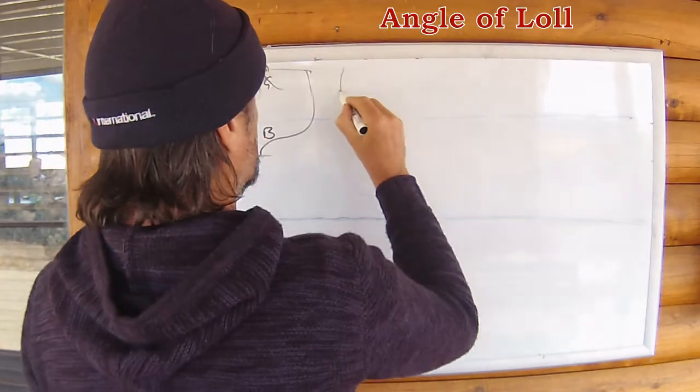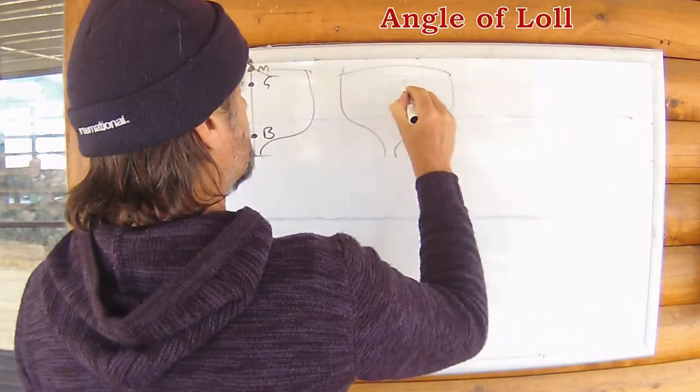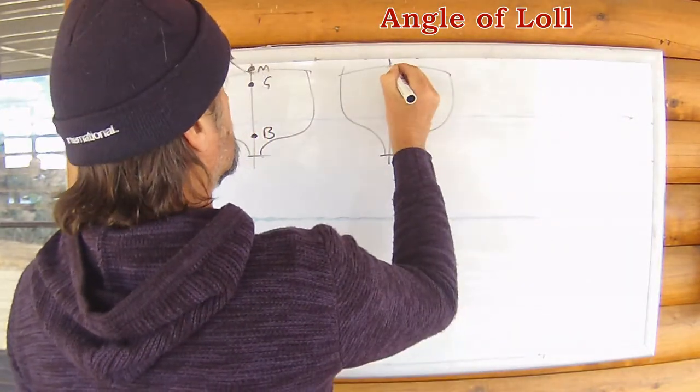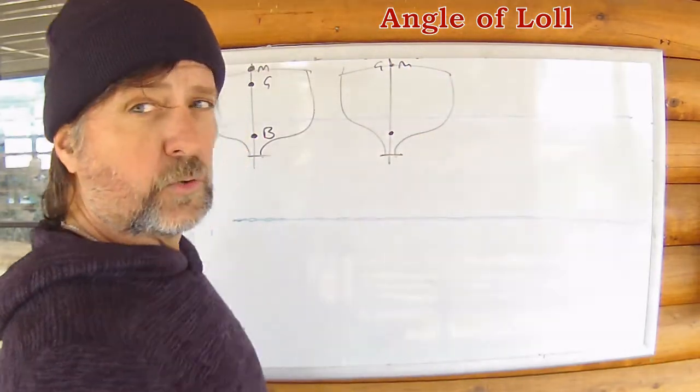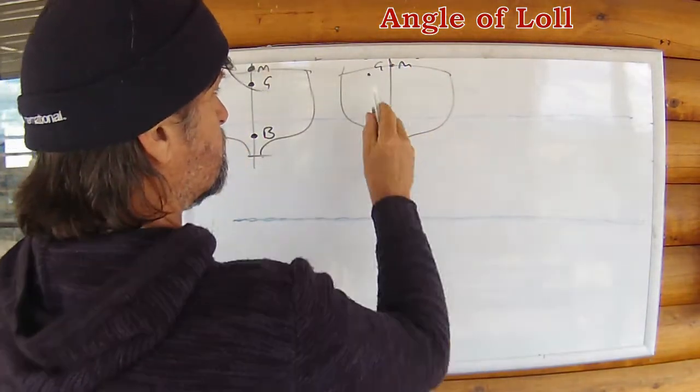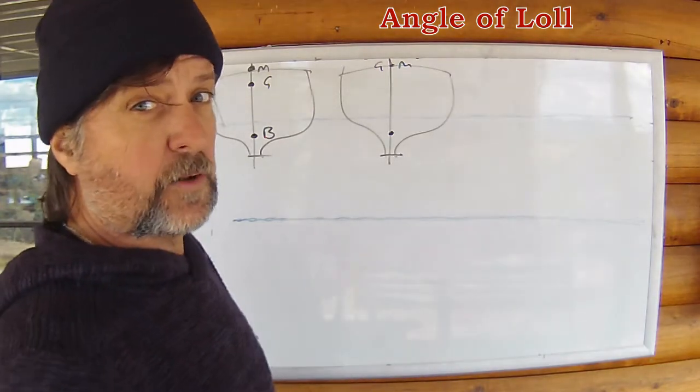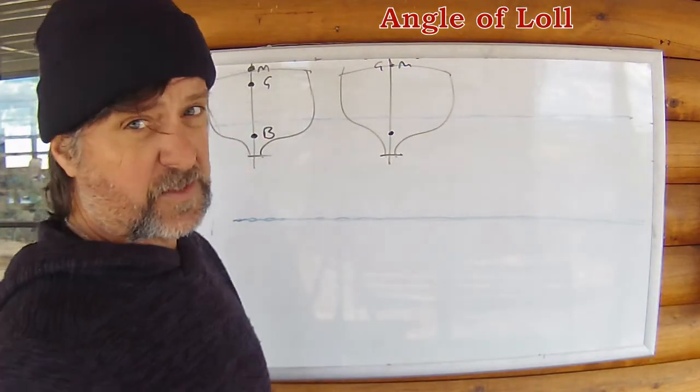So the vessel may end up in a position of neutral equilibrium. G and M on the same spot. You might go a few miles and not even realize it if the sea is calm.